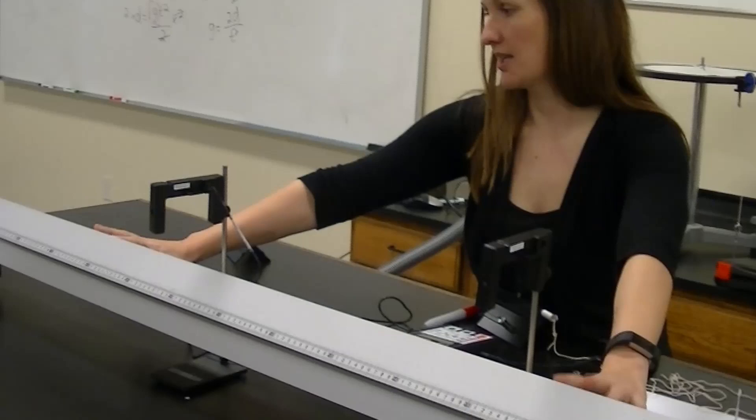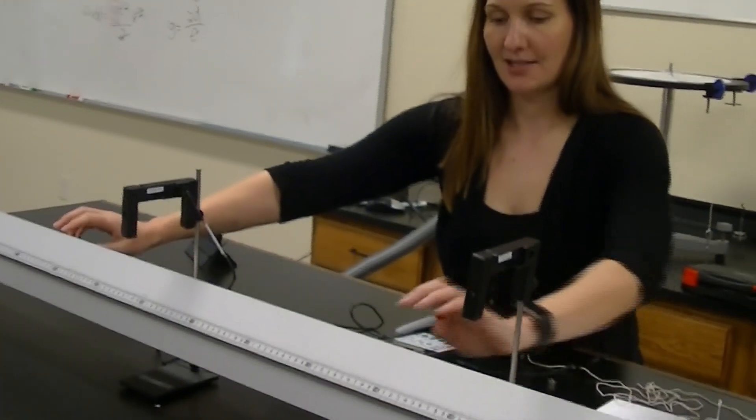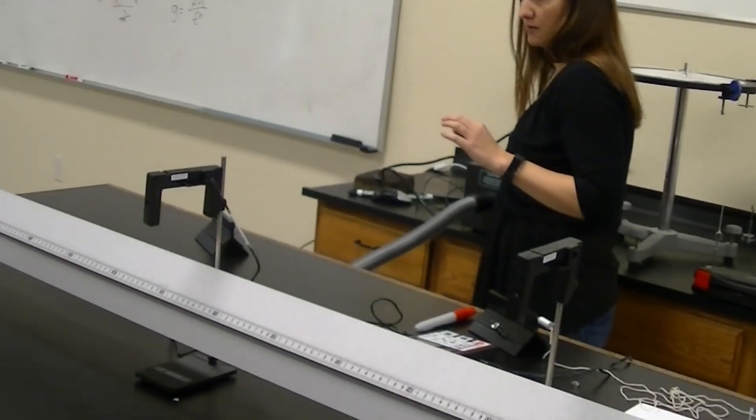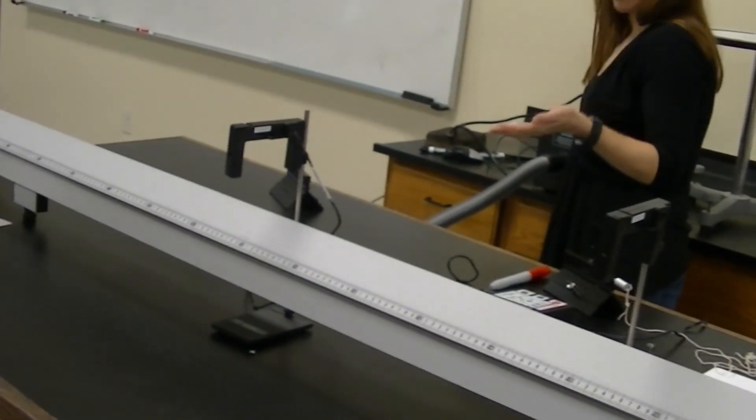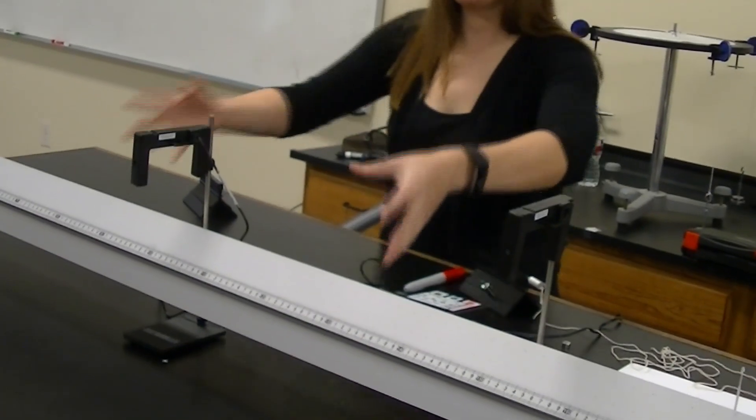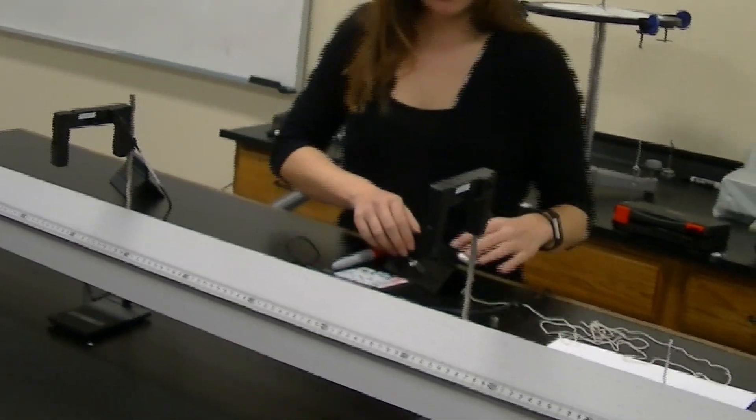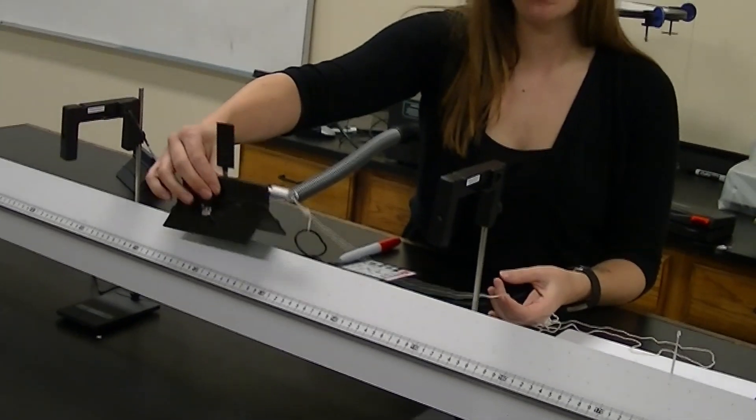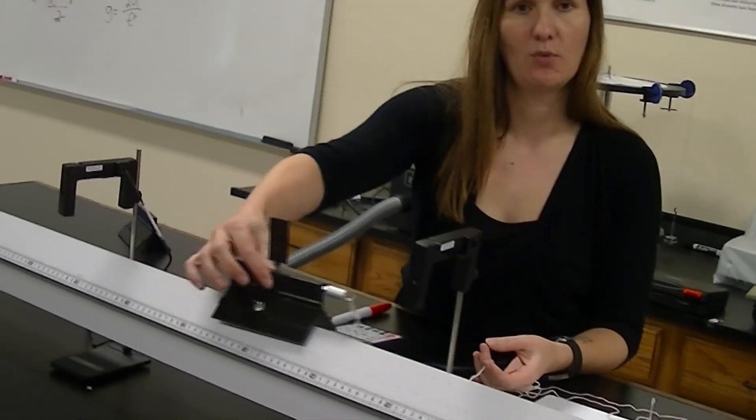So in this experiment, we're going to be using an air track, and that's what this thing is here. An air track has tiny holes along it, and we're going to turn on this pump, and that pump is causing the air to come through the holes. What this is going to do is it's going to allow for less friction, so that when this glider is on the track, it can move with ease.